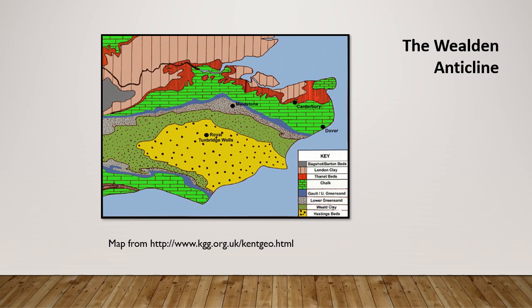This is a map of the geology of the area. We're on what we call the Wealden Anticline, which is a fold in rocks. This was actually formed due to Africa colliding with Europe — Africa is moving northwards very slowly, compressing the rocks of Europe and creating folds and faults.